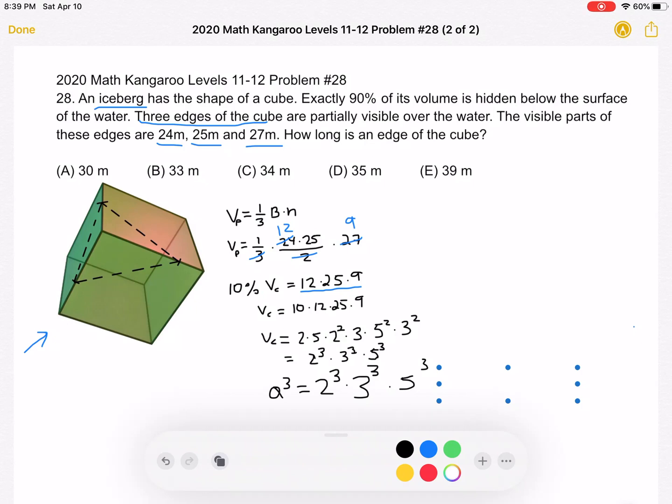So when we take the cube root of both sides, we'll get that A is equal to 2 times 3 times 5, 6 times 5, which is equal to 30. And that is answer choice A.